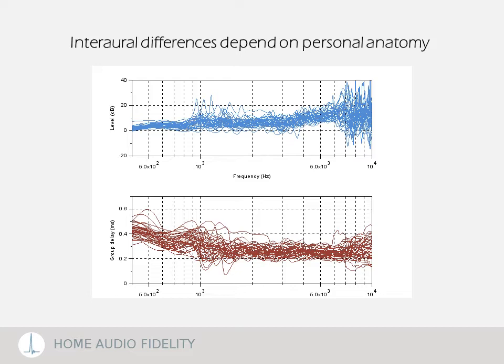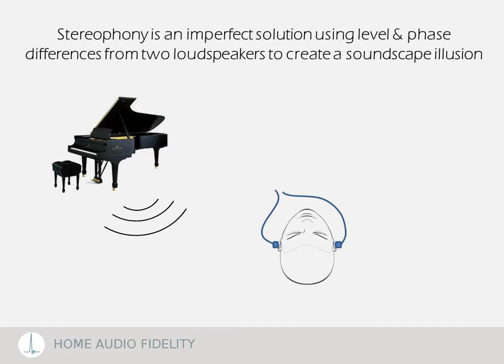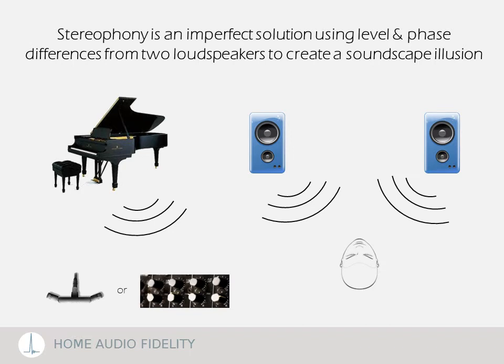Considering the binaural nature of our auditory system, an almost perfect reproduction chain would require a two-microphone recording system. This system should take head and ear shadowing effects into consideration, like a pair of in-ear microphones. The associated playback system should ideally be placed at the ear entrances. This would not be practical and not generic, as each individual has a different anatomy.